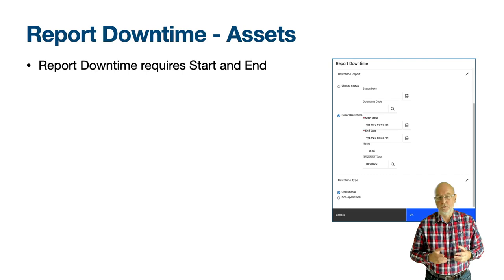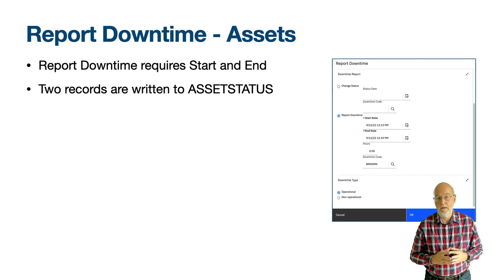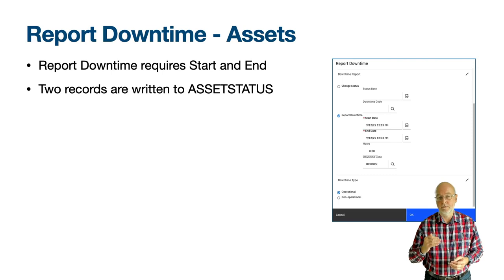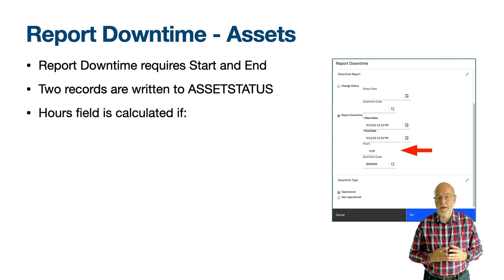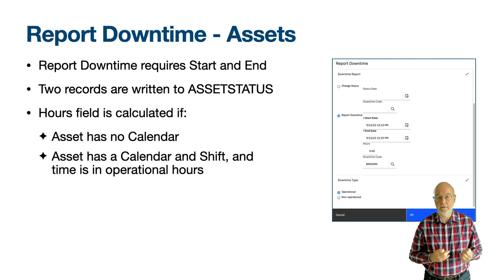The Report Downtime radio button allows you to report downtime after it has occurred. The start date and end date will both default to date and time now but they can be modified if the start date is before the end date. A Downtime code can be selected. When you press OK, two transactions will be written to the AssetStatus object or table. The start date is used to write a transaction when the asset went down and the end date is used to write a transaction when the asset is moved to an Is Running status of Up. The Hours field is read-only and is calculated if the asset has no calendar or shift, in which case the hours is the time between start date and end date that is within the shift's work periods — the operational hours of the asset. If the asset has a calendar and no shift, Maximo assumes that the asset is not operational and will not calculate downtime hours.